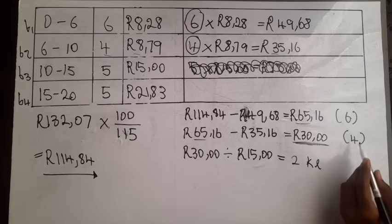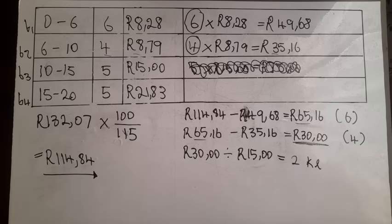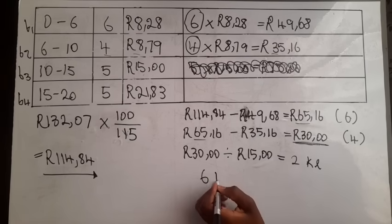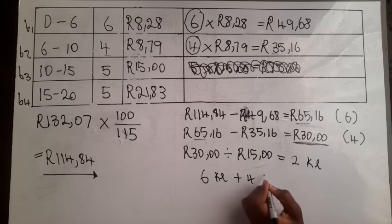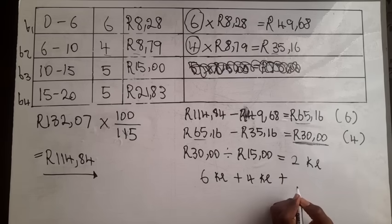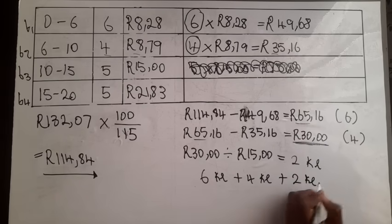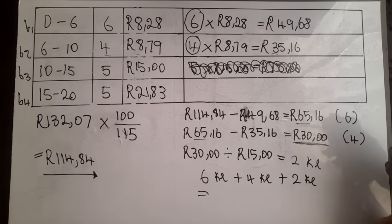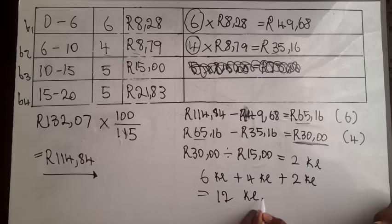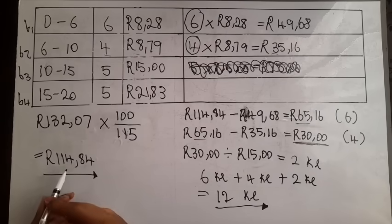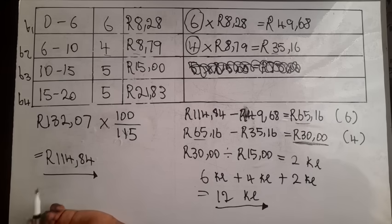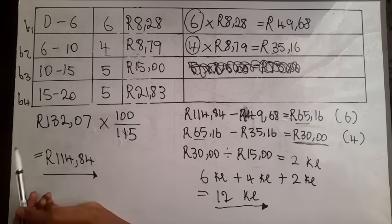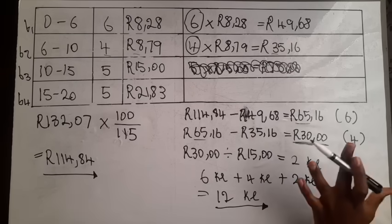We now add all the kilolitres together: 6 kilolitres from Block 1, plus 4 kilolitres from Block 2, plus 2 kilolitres from Block 3, gives a total of 12 kilolitres. This means the household used 12 kilolitres of water. For those 12 kilolitres they paid R114.84 excluding VAT, and when VAT was included it came to R132.07.